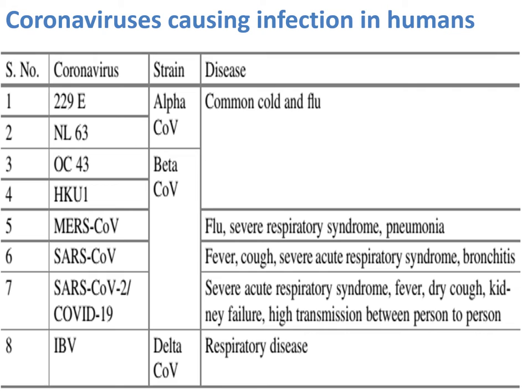MERS can cause flu, severe respiratory syndrome, and pneumonia. SARS can cause fever, cough, severe acute respiratory syndrome, and bronchitis. COVID-19 causes severe acute respiratory syndrome, fever, dry cough, kidney failure, and most notably, high transmission between persons. High person-to-person transmission is the main drawback of COVID-19. IBV can cause respiratory disease. Total deaths are more than 2.5 million, affecting almost all countries, with transmission from animal to human and then human to human.